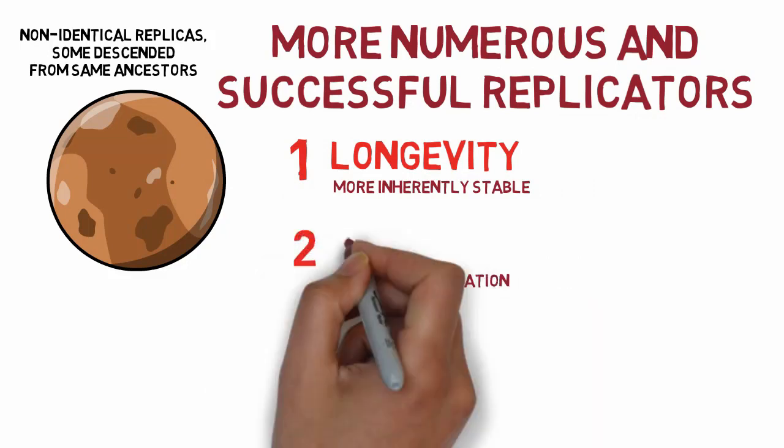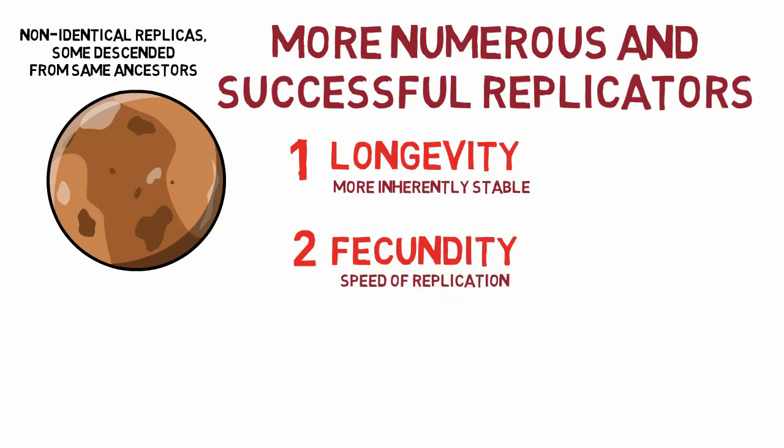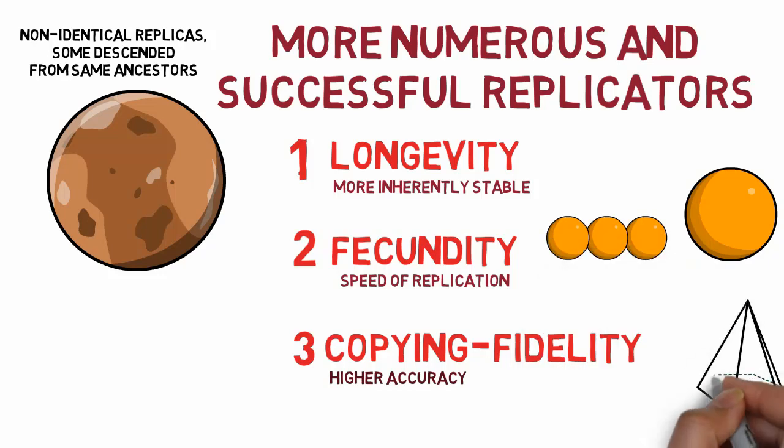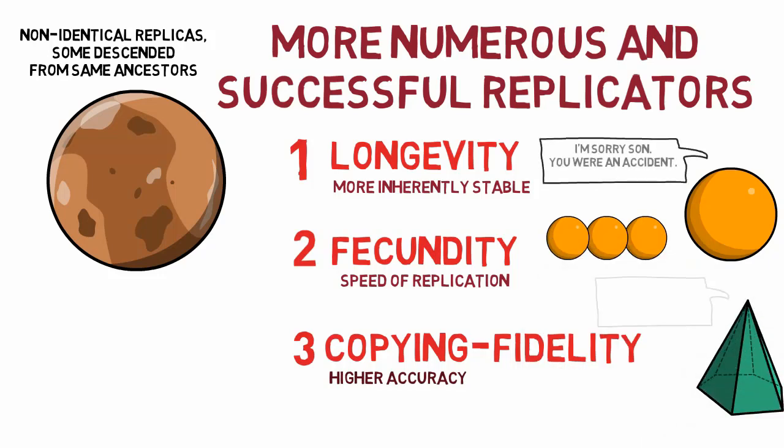Secondly, the speed of replication, known as fecundity, would also make replicators of one kind more numerous than others, and therefore replicators would trend towards higher fecundity. Thirdly, replicators with higher accuracy, known as copying fidelity, would be positively selected as well, given that if the frequency of mistakes were too high, the replicators have a high chance of producing unstable children and therefore losing them.